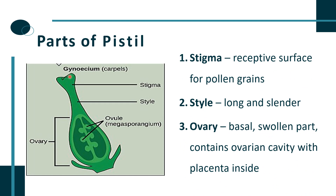Let us have an overview of the parts of pistil. There are three distinct regions. The terminal region known as stigma is the landing platform for pollen grains, which is connected to the basal swollen part known as ovary through a long and slender style. The ovary contains an ovarian cavity, and placenta is also located inside. From placenta, ovules arise. The number of ovules may be one in some plants like wheat and paddy, and may be many in other plants like papaya, watermelon, or orchids.